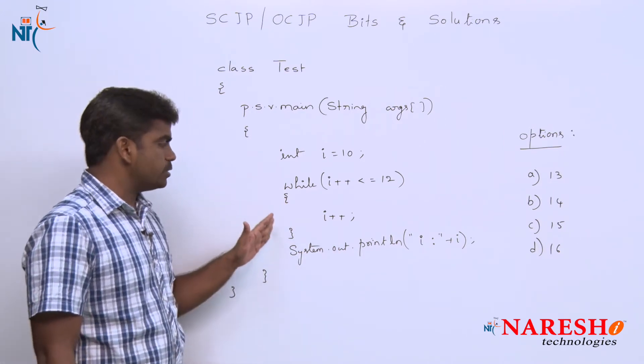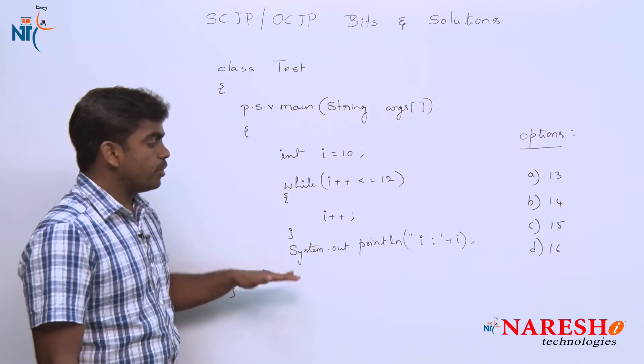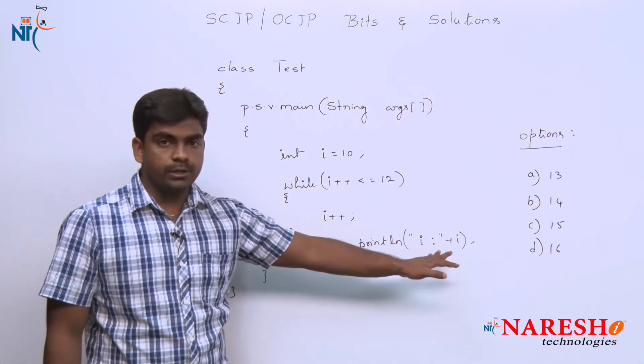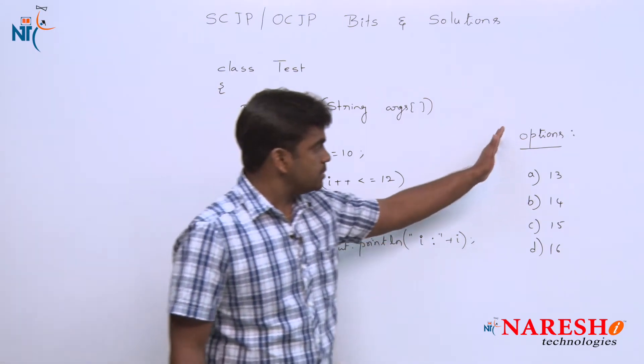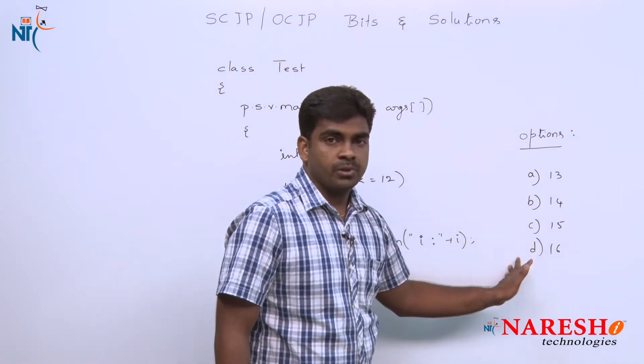Execution starts from the main method. Inside the main method we are declaring one variable I, initializing it with the value 10. Inside the loop we have written some code, and after the while loop executes, we are printing the value of I. They have given some options.